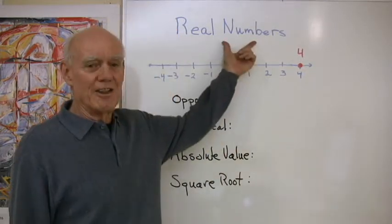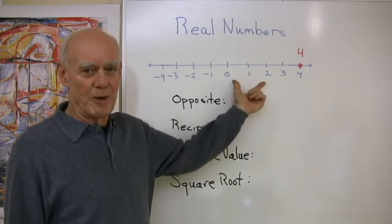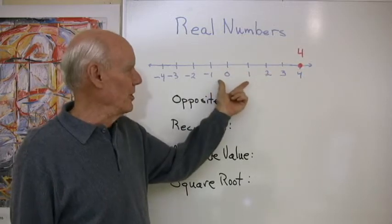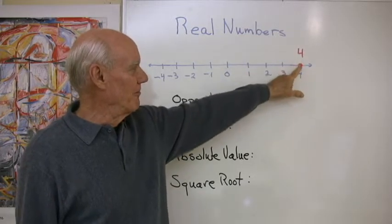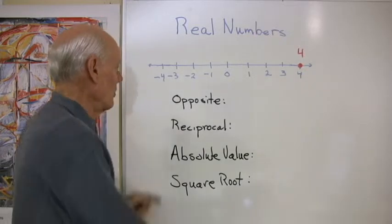In mathematics, we define real numbers as numbers associated with points on the real number line. This gives us a visual way to interpret it. So you can see here's the number four, and it's associated with that point on the real number line.